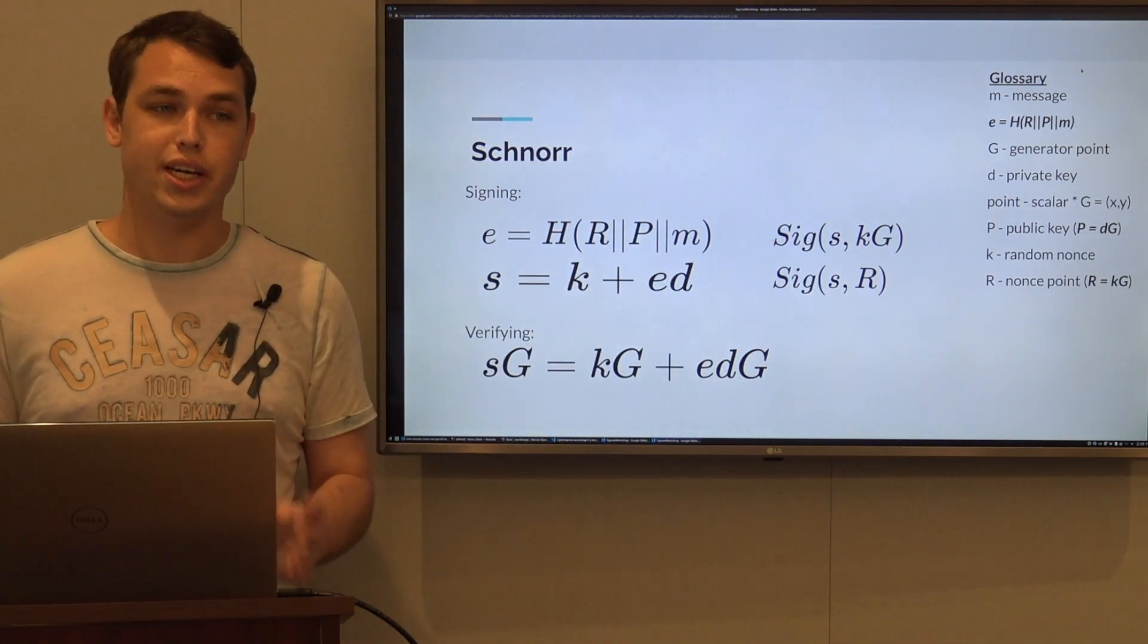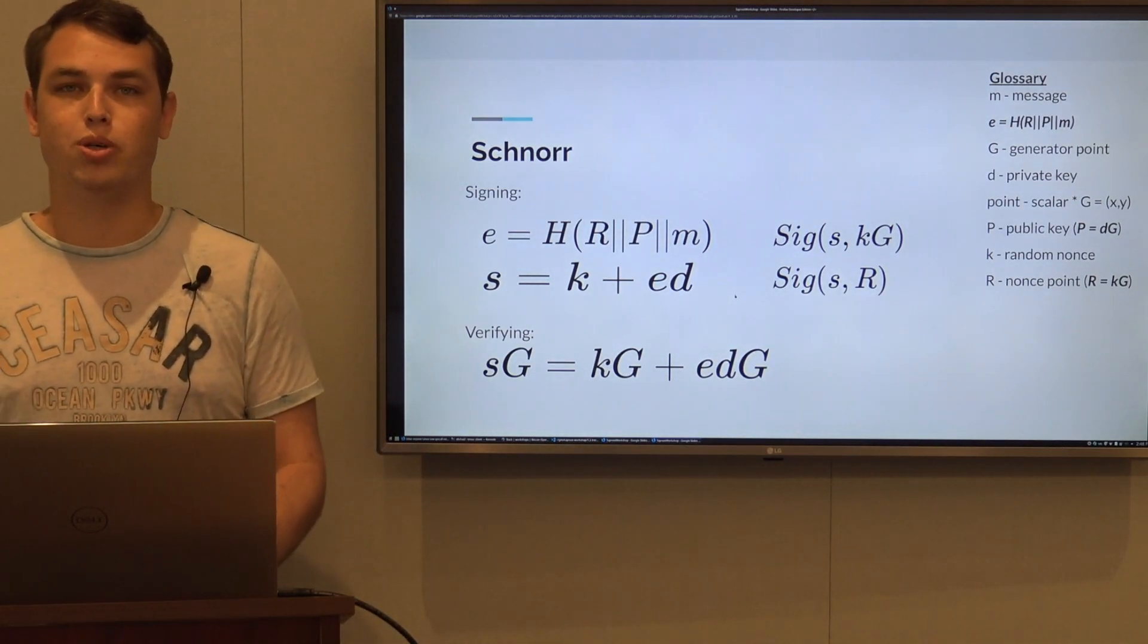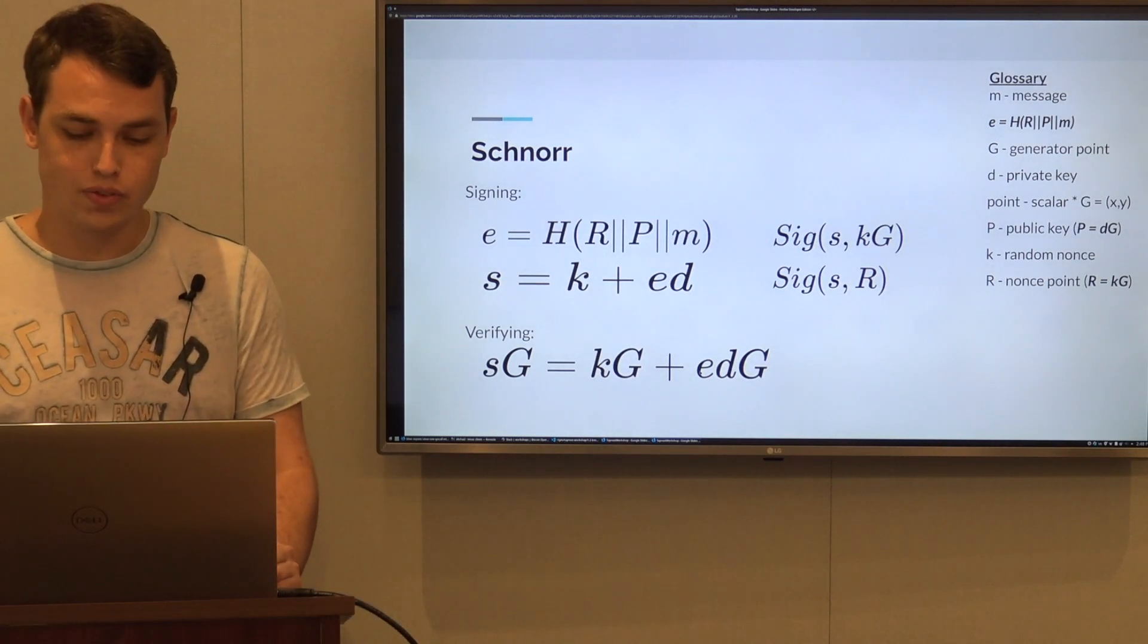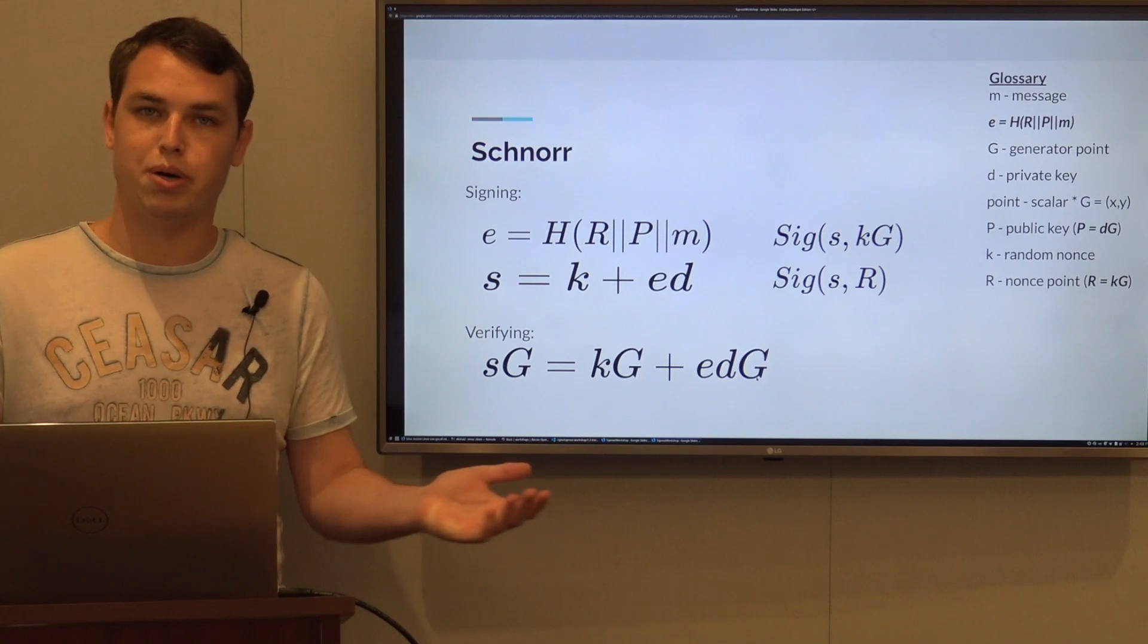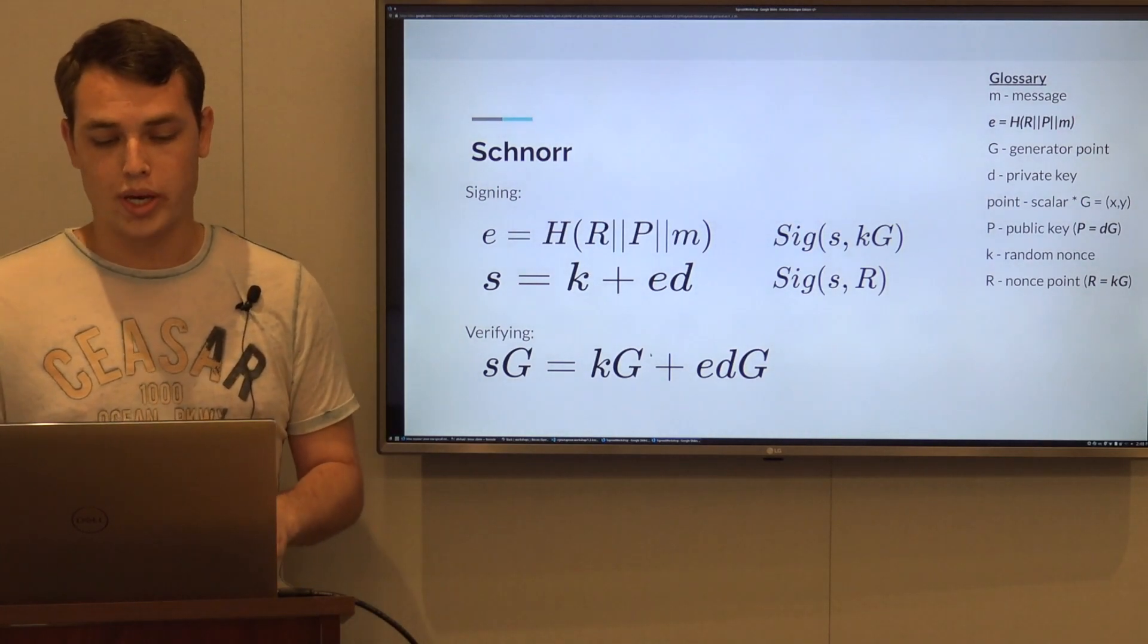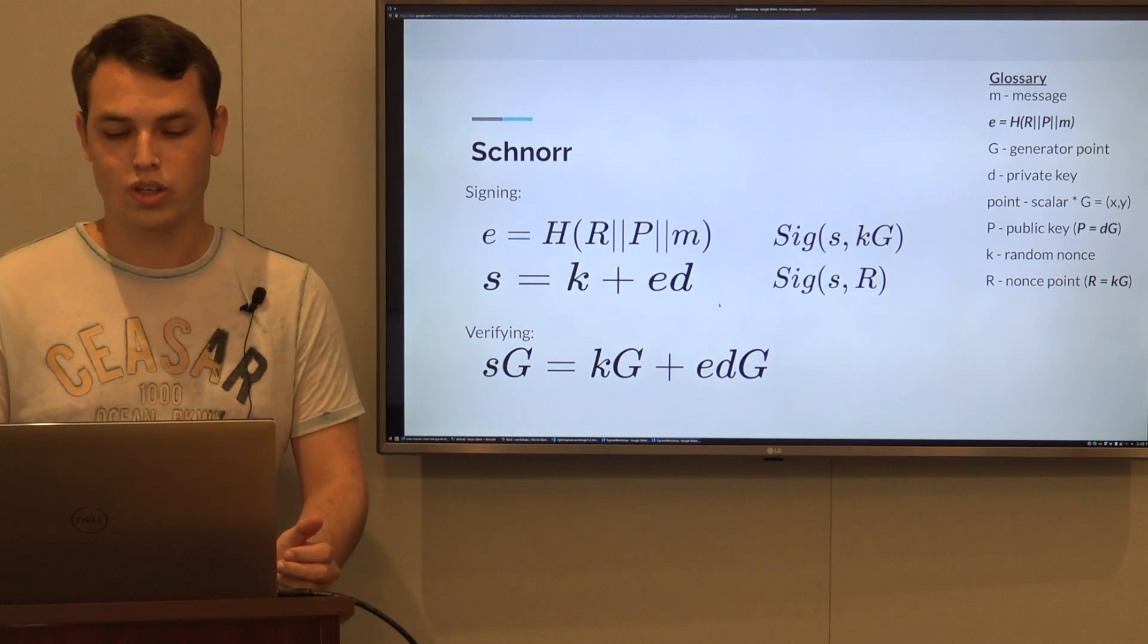The signature is going to be S, the scalar that we just computed, and R which is the public point of the nonce. To verify, we have E, we have D multiplied by G which is the public key, and we have K times G which is the R that's part of the signature.